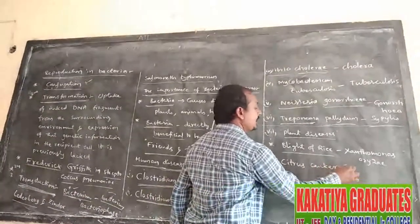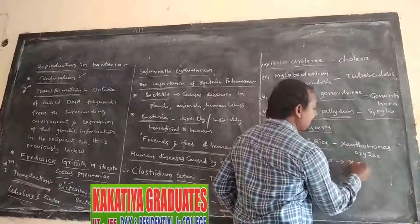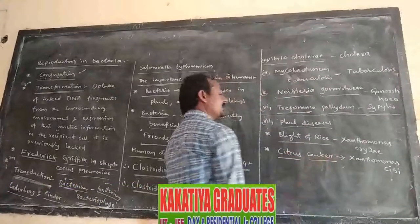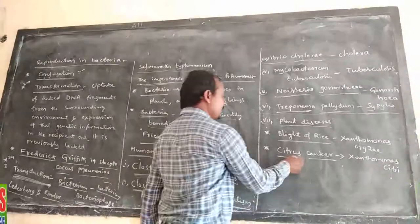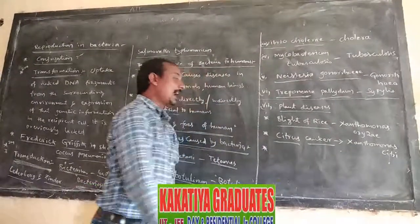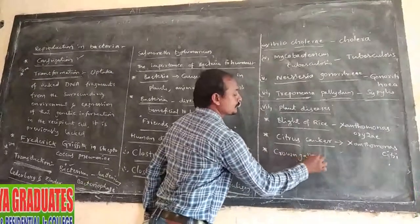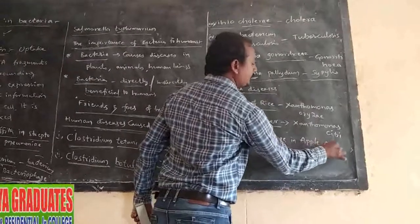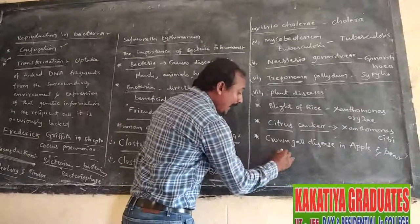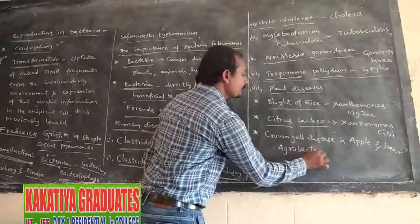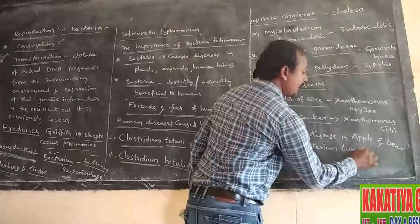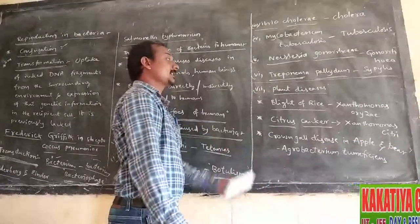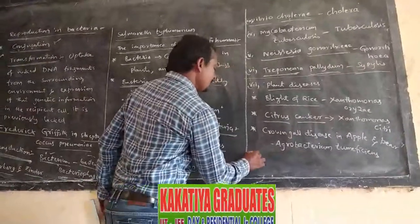Citrus canker is caused by a bacteria Xanthomonas oryzae. Next, Agrobacterium tumefaciens is a bacteria. It causes Crown gall disease. These are the plant diseases caused by bacteria.